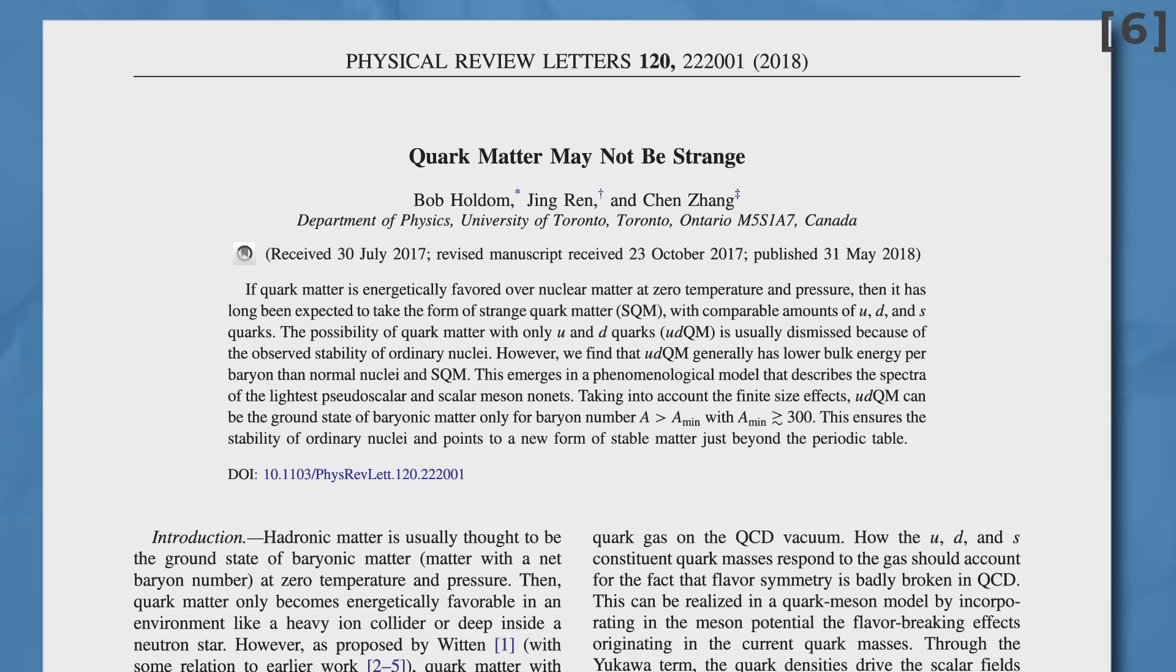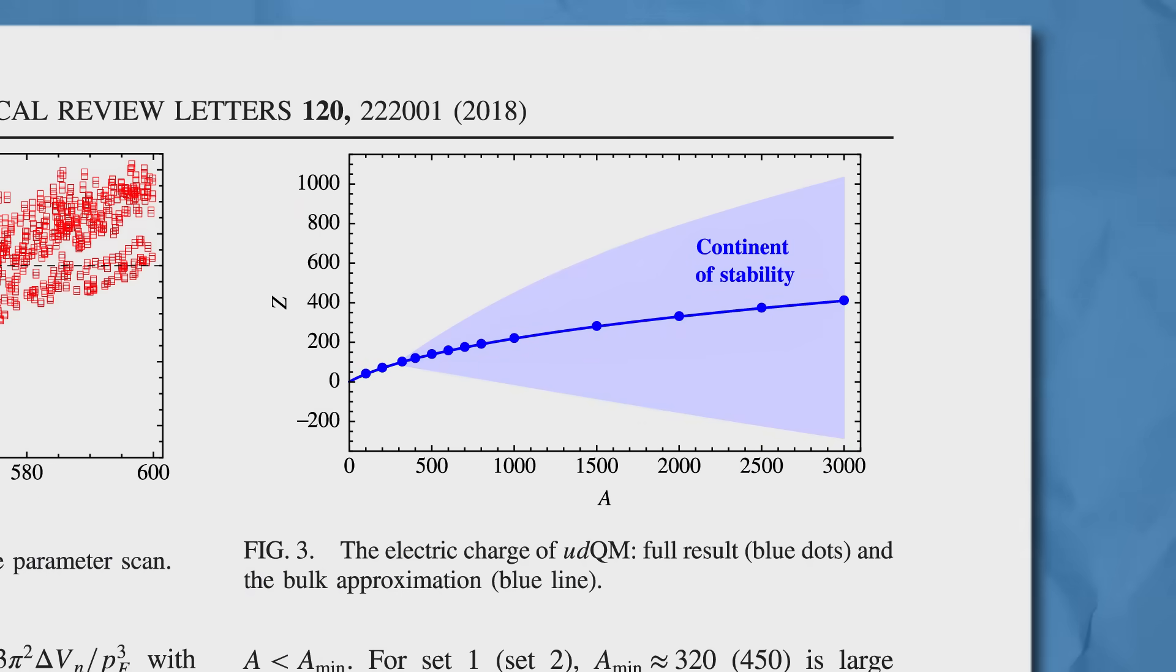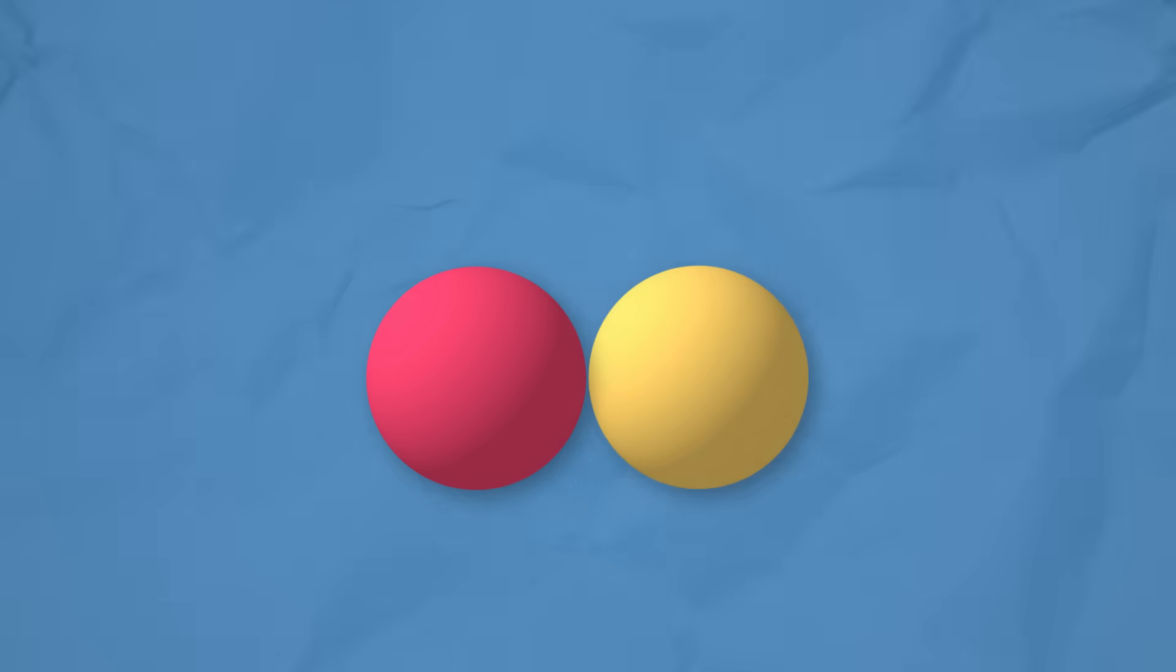However, some theoretical physicists have gone a bit further than that and come up with a hypothesis called the continent of stability. The idea is that if nucleides get heavy enough, there would no longer simply be atoms with neutrons, protons and electrons, but rather, the neutrons and protons are broken apart into up and down quarks.